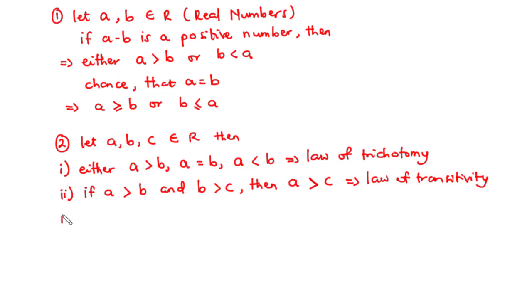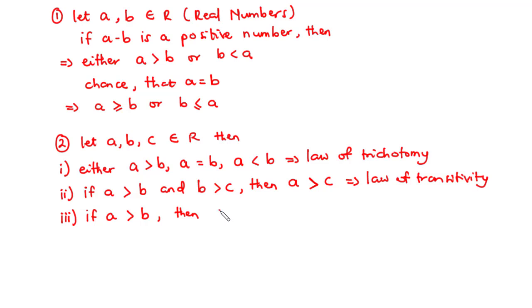Three: if a is greater than b and another real number c is added to both a and b, then because initially a was greater than b, a plus c will also be greater than b plus c.